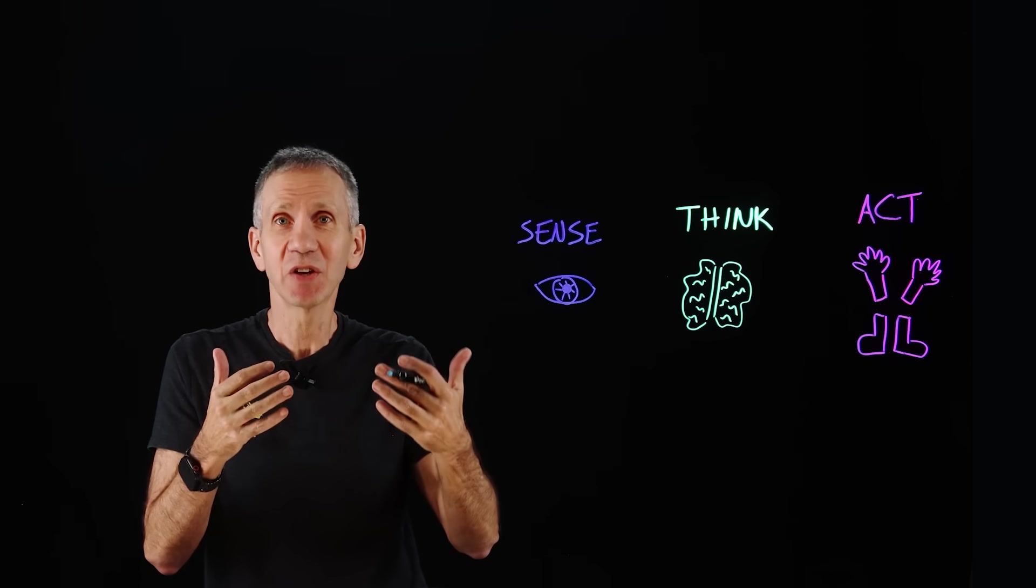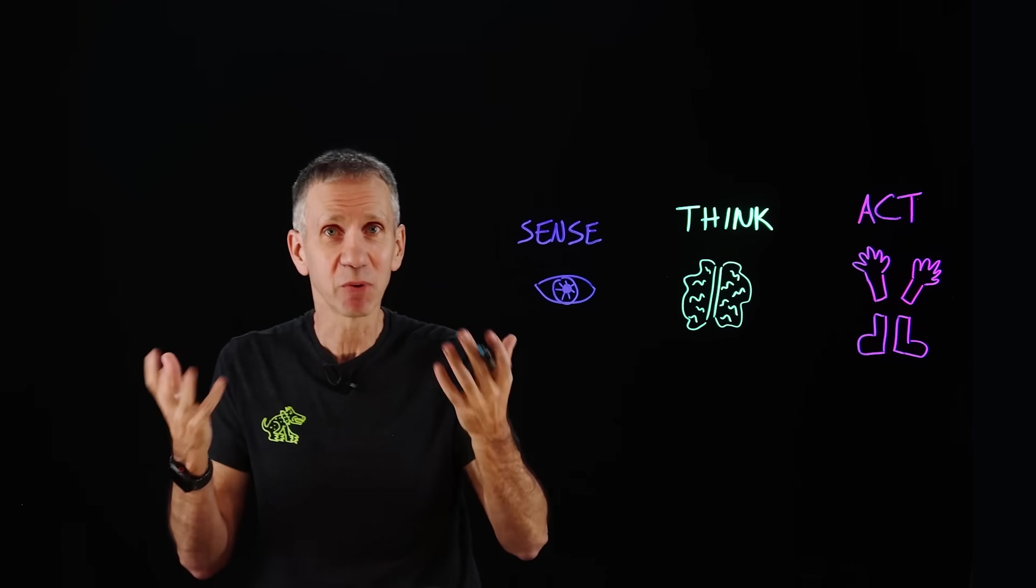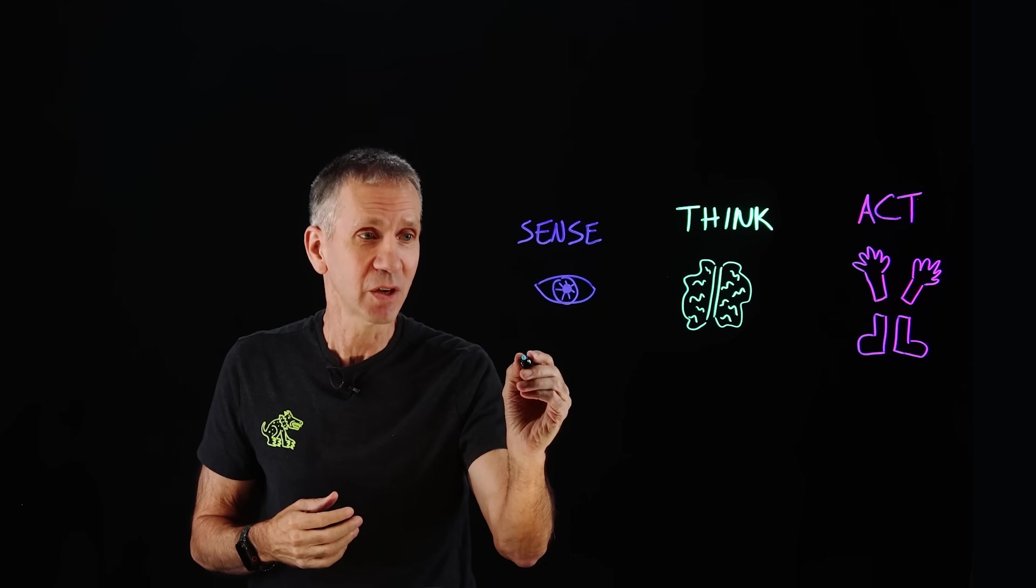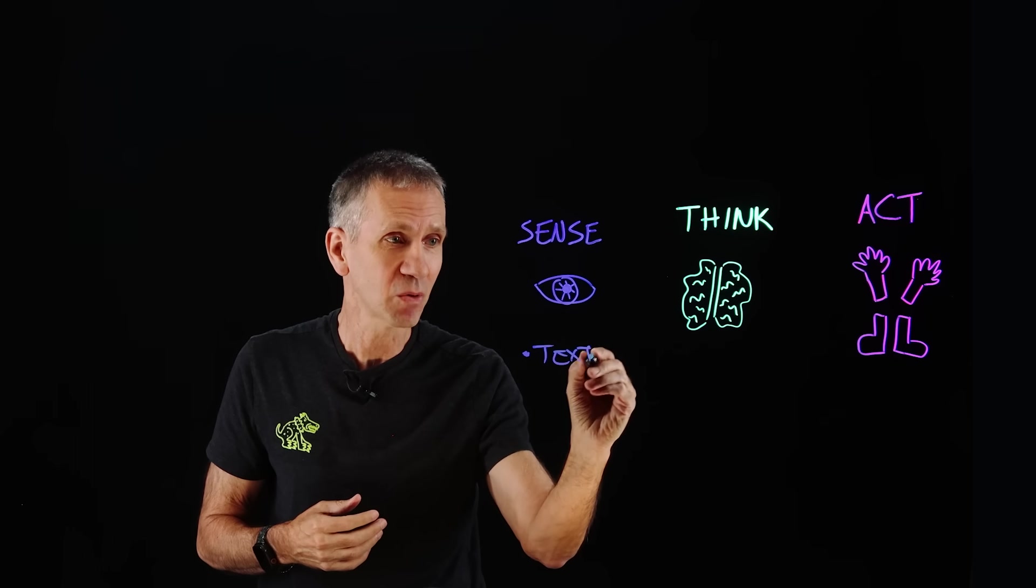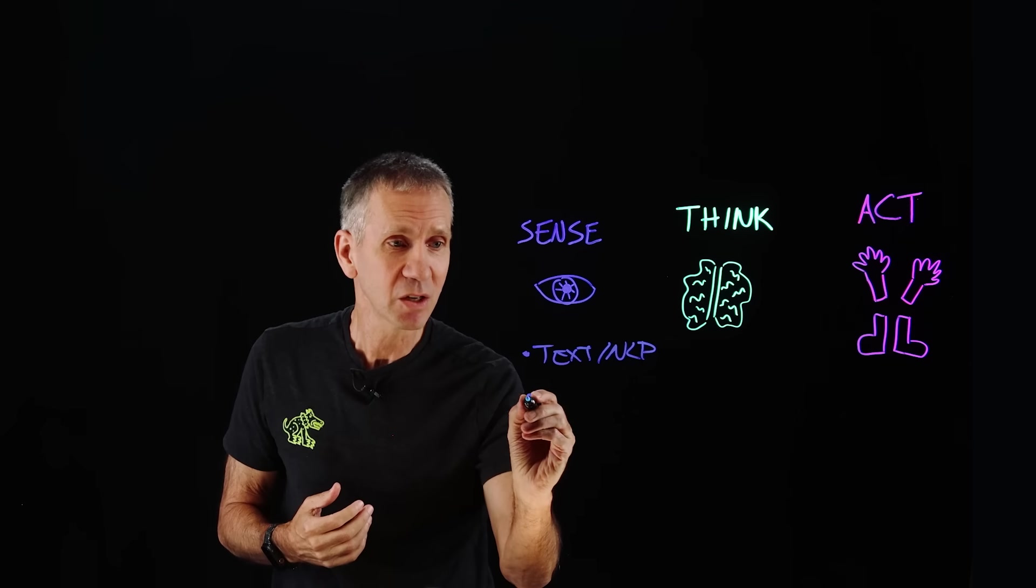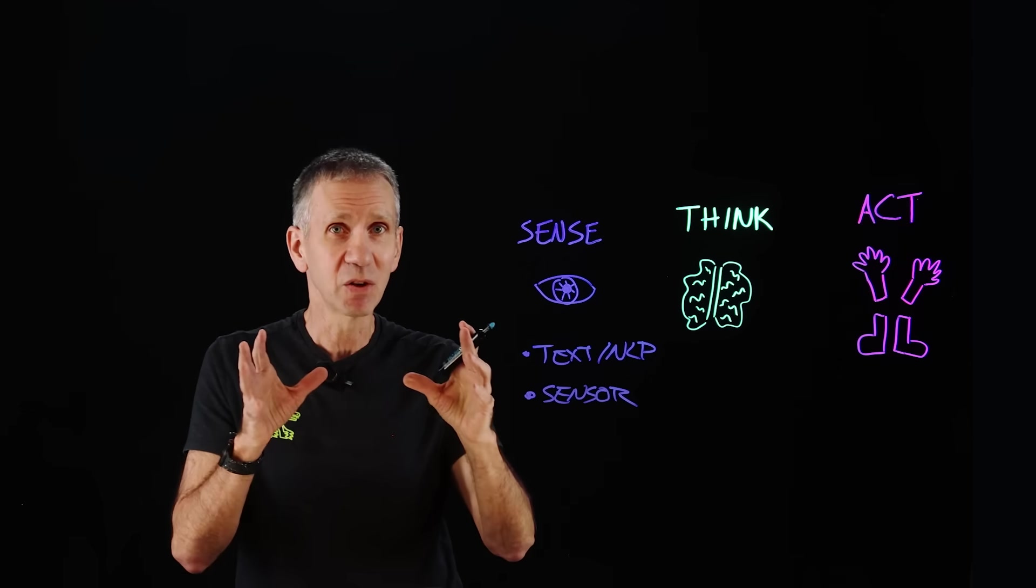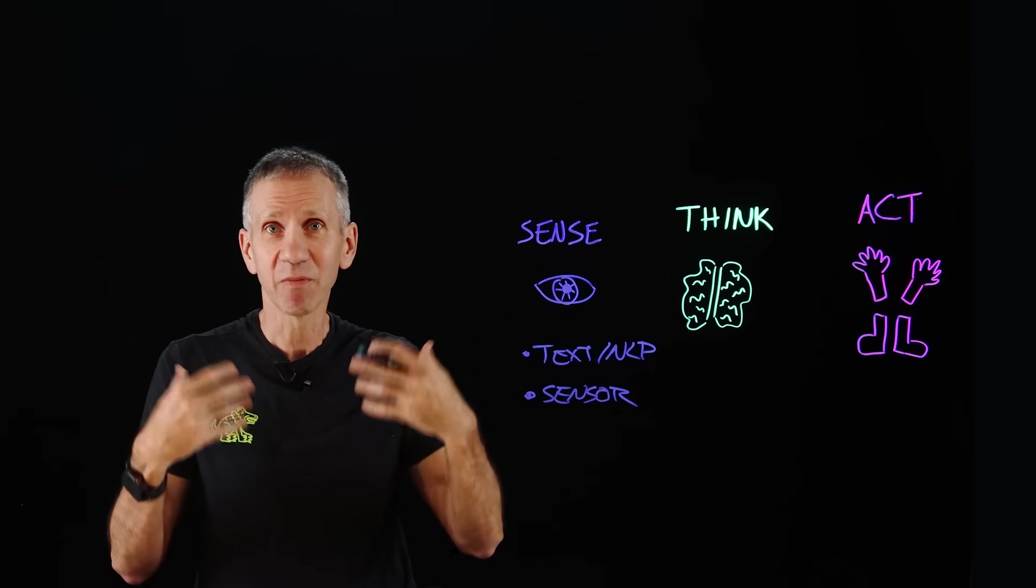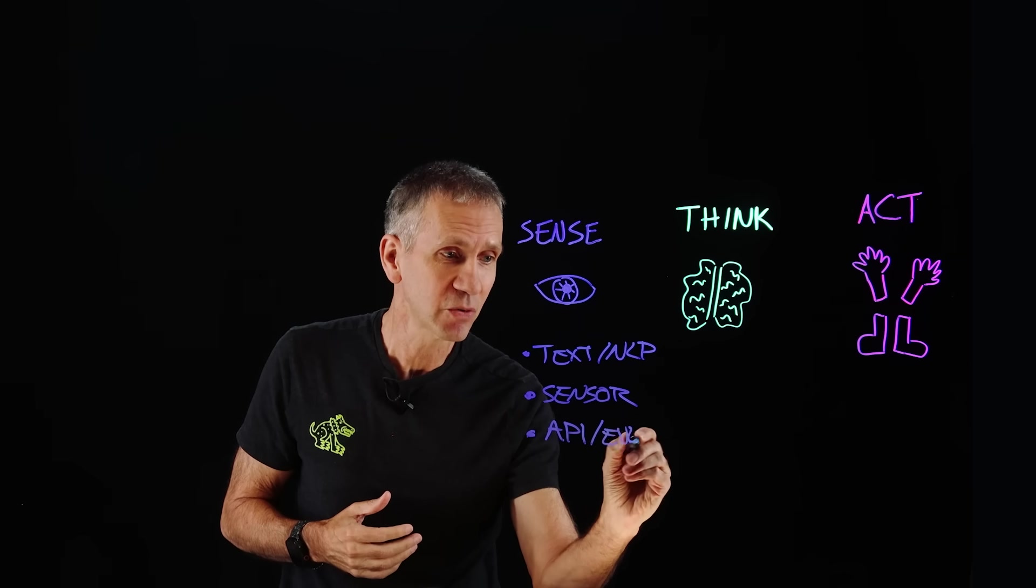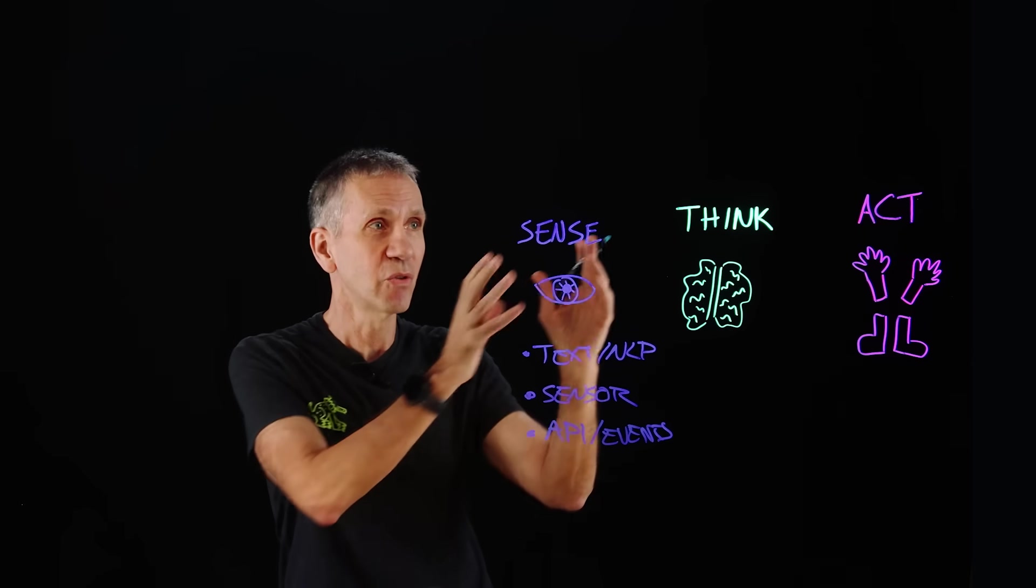We'll start with the sensing part of the agent. The agent has to get some information in. This is basically its perception. Just like a person has eyes and ears and we perceive through those senses, if we're talking about an AI agent, how does it get information in? One of the ways is through text. It could be natural language processing. If we're talking about a chatbot, that information just gets typed in. It could also be some sort of sensor—a vision sensor, a camera, a microphone—that brings in information from the outside world. It could be APIs or other types of events that are being triggered as well.